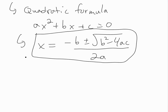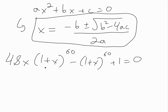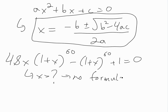But let's say we had a function like 48x times (1 plus x) to the power of 60 minus (1 plus x) to the power of 60 plus 1, and we want to find what x is at the roots. Well, in this case, there is no possible formula. So we can't just basically plug in a formula like the quadratic one — we have no formula to solve for x.